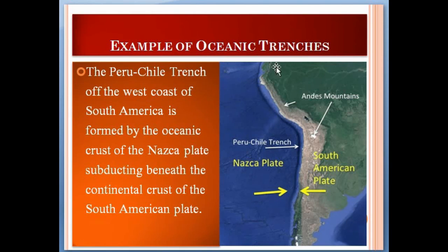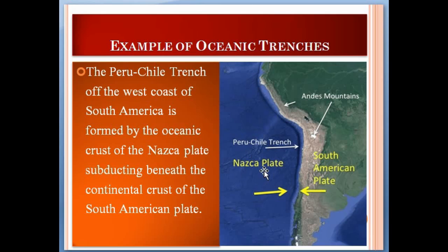An example of an oceanic trench: the Peru-Chile Trench off the west coast of South America is formed by the oceanic crust of the Nazca Plate subducting beneath the continental crust of the South American Plate. Here you can see the continental plate (South American Plate) and the oceanic Nazca Plate. When the dense oceanic plate goes down beneath the less dense South American Plate, the Peru-Chile Trench forms.